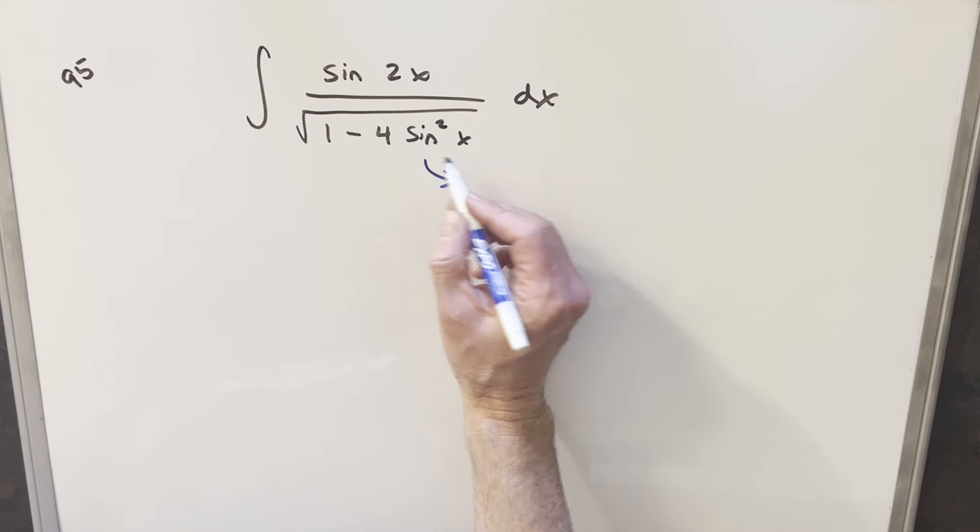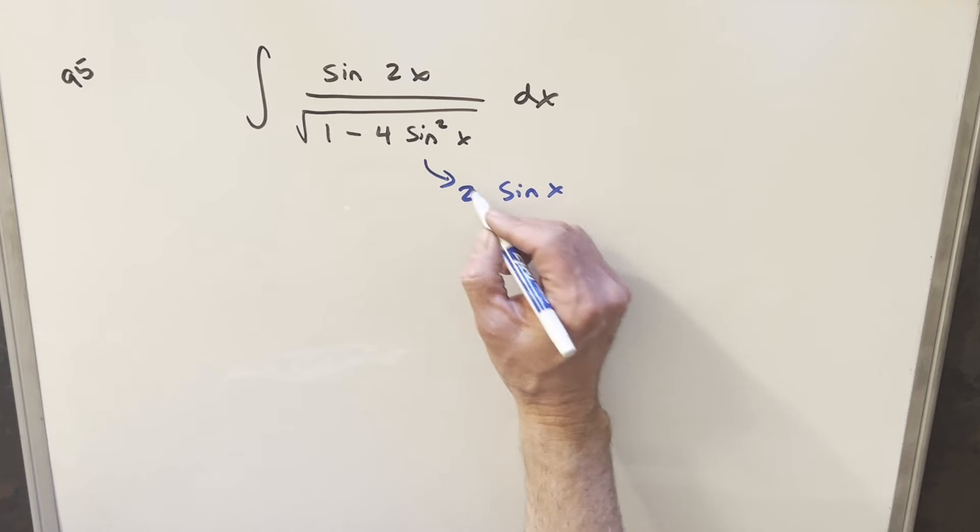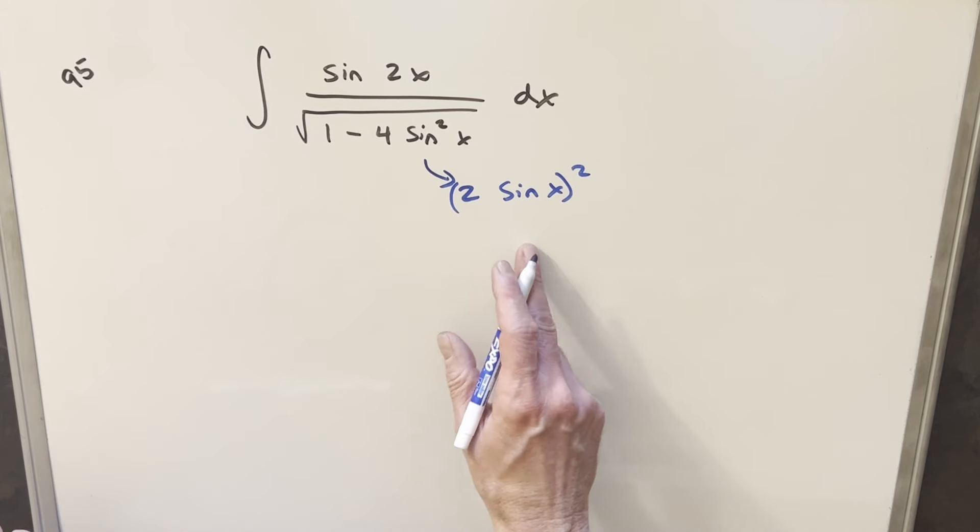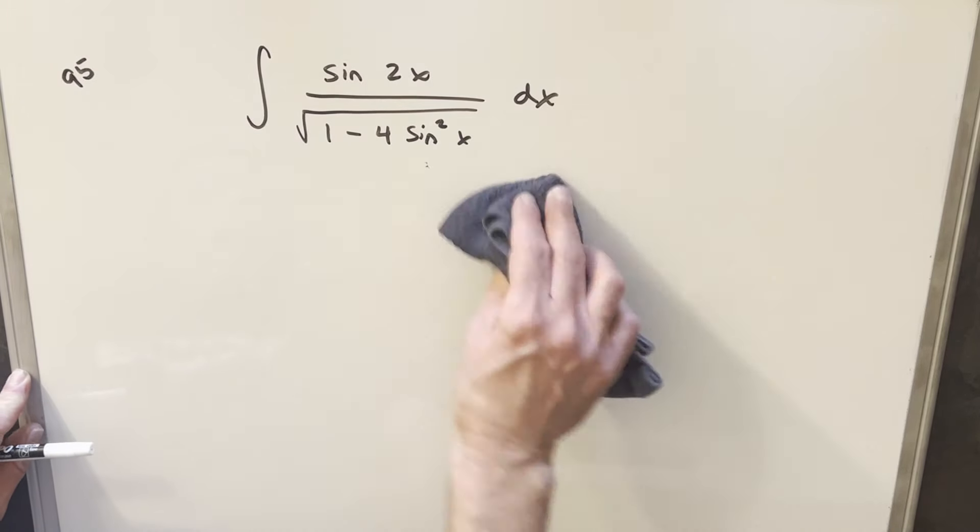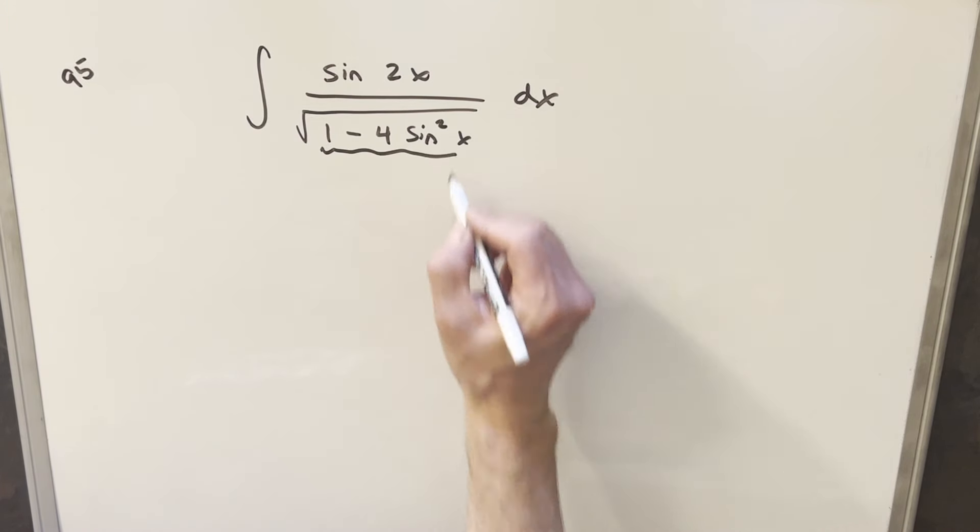When I did this the first time, I wrote this as 2 times sine x squared, and then I made a u-substitution. It worked out okay, but I created a few extra steps. What I found is it seems a little quicker if I just make a u-substitution for this thing - not the whole radical, but just what's inside.